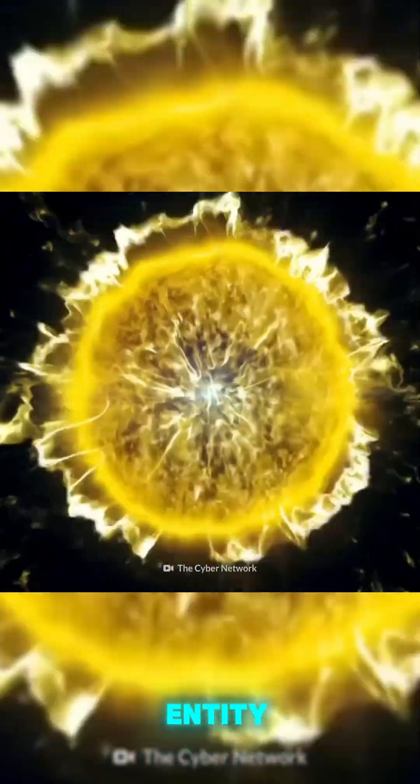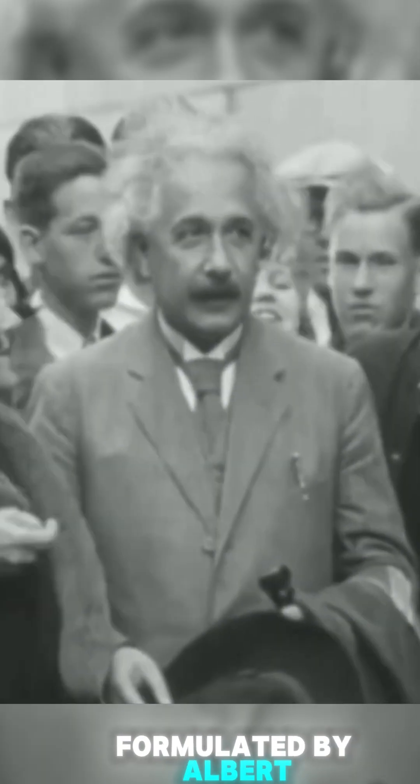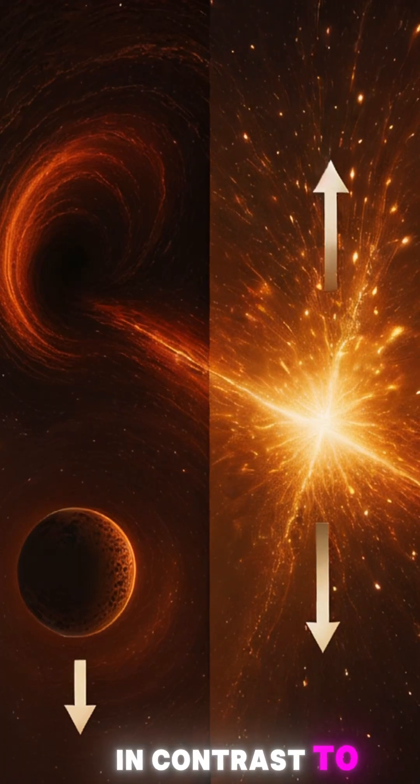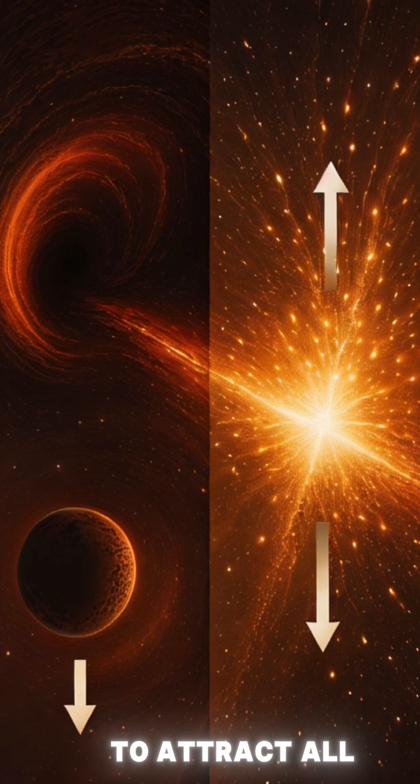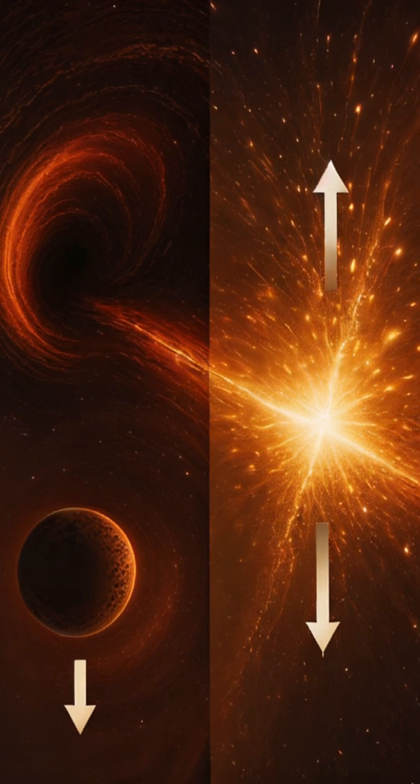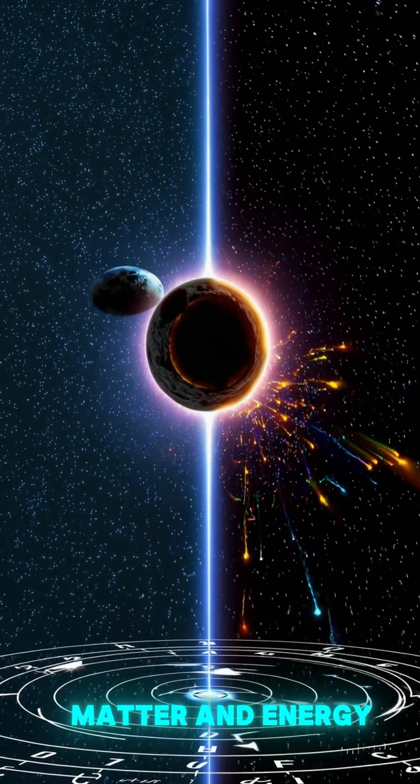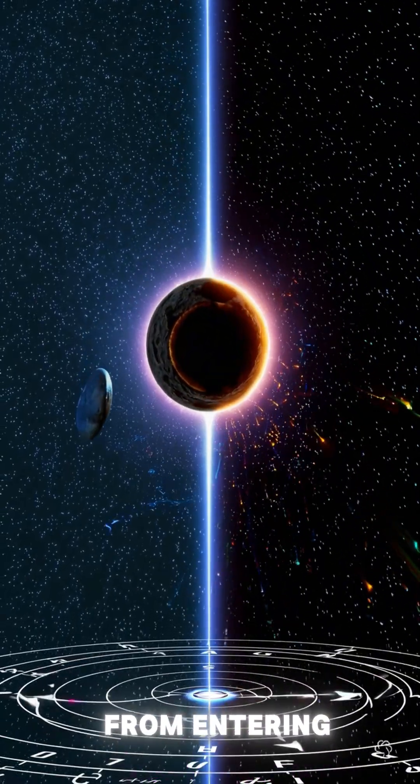A white hole is a theoretical entity predicted by the equations formulated by Albert Einstein. In contrast to black holes, which are known to attract all matter and even light, white holes are theorized to expel matter and energy while preventing anything from entering.